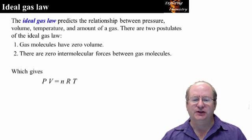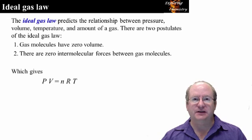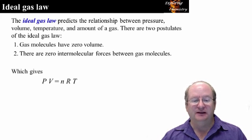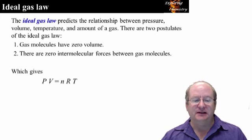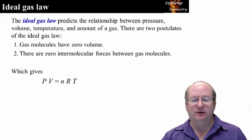As you consider these postulates, you might begin to question whether they are true. They are not true, but they are a very good approximation of the properties of many common gases. For example, if we were to blow up the gas molecules so that one nitrogen molecule were the size of a soccer ball, there would be only one gas molecule in this building — the next gas molecule would be over 200 meters away. Gases at one atmosphere are around 1,000 times less dense than liquids and solids. Later in this chapter, we will learn when these postulates break down and introduce the van der Waals equation, which gives a better estimate of the state of a gaseous system.